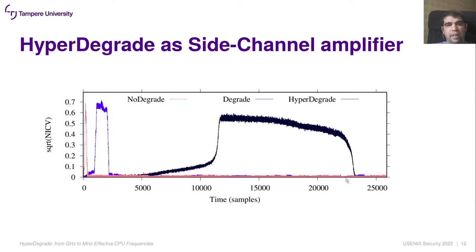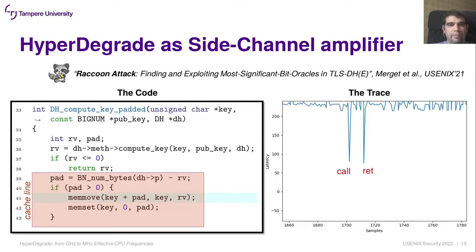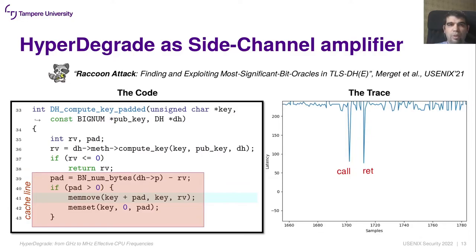Please refer to the paper for the details of this experiment. We also estimated the impact of HyperDegrade as a side channel amplifier using a real side channel leakage. As a target, we selected a leakage in OpenSSL discovered by the Raccoon attack authors but not exploited before. The leakage is due to a conditional statement at line 40, and the attacker is interested in tracking when this branch is taken. At the right of the slide, we see a typical Flush+Reload trace where the cache line containing the call to the main move function is targeted. In this trace, we detected two cache hits — one observed during the call instruction and another when the function returns — forming a pattern that indicates the branch was taken.